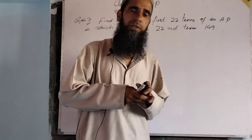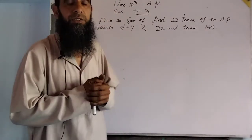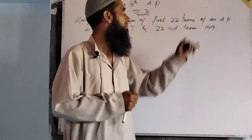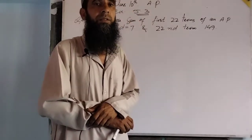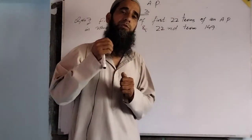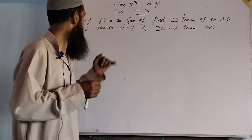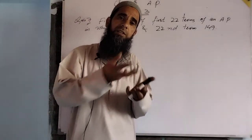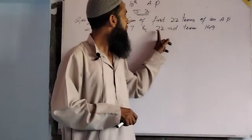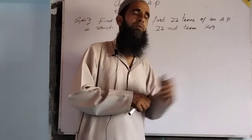Dear students of class 10, today we will discuss one question from Exercise 5.3 of the chapter Arithmetic Progression. The question is: find the sum of the first 22 terms of an arithmetic progression in which d is equal to 7 and the 22nd term is 149.